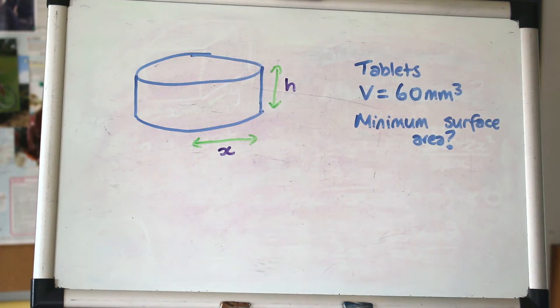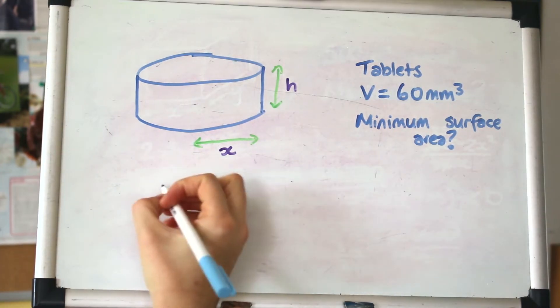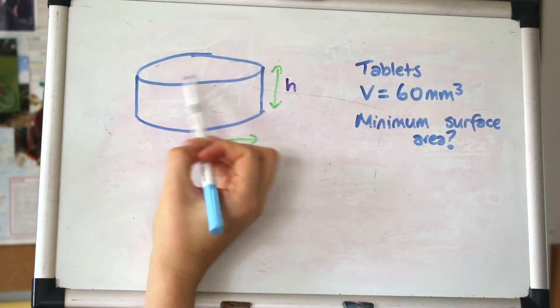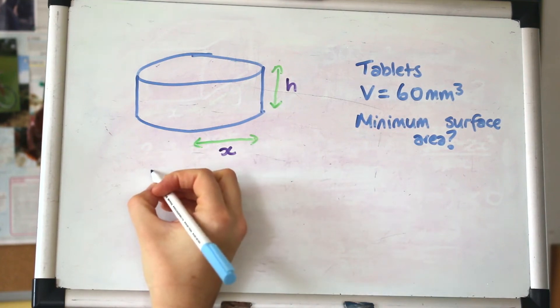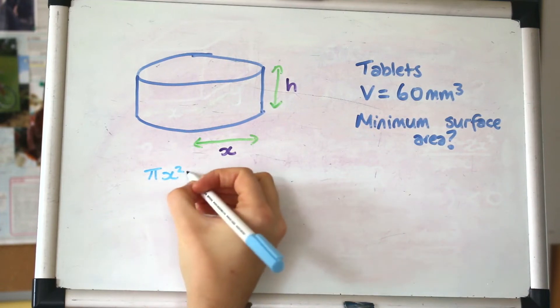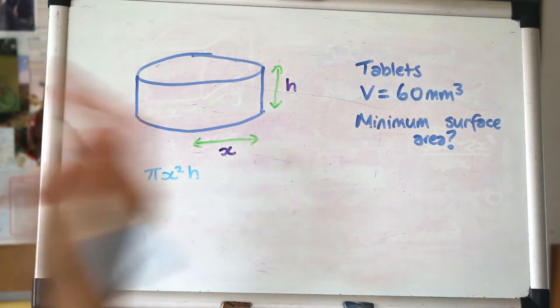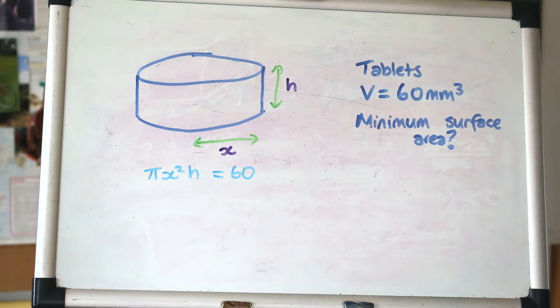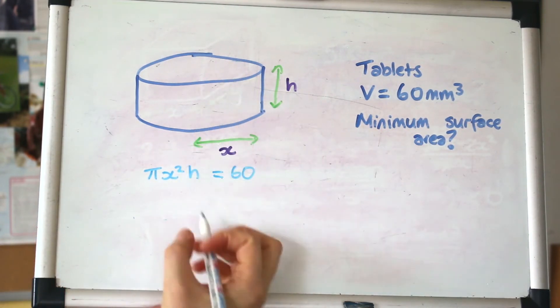This is my best drawing of a tablet. A company is manufacturing tablets. The volume is 60 mm³ and they want to minimize the surface area. We need to make an equation for the volume. The volume of a cylinder is the area of the circle times by h, so πx²h = 60. Now surface area.